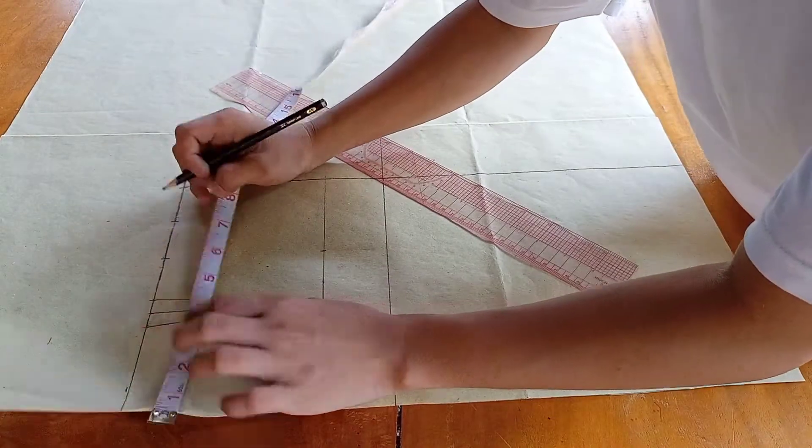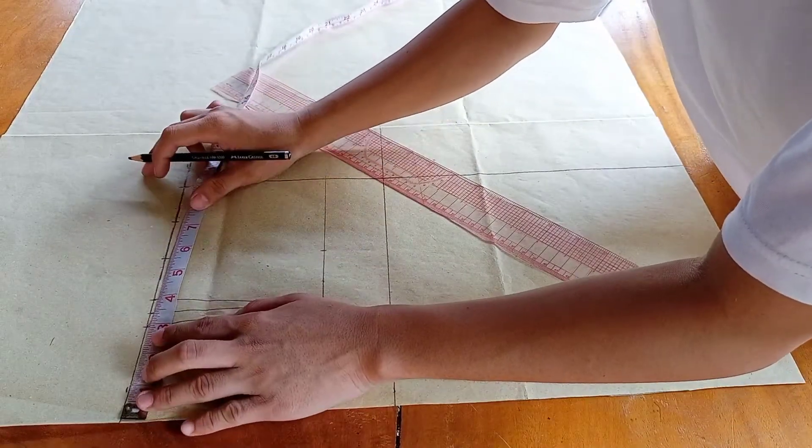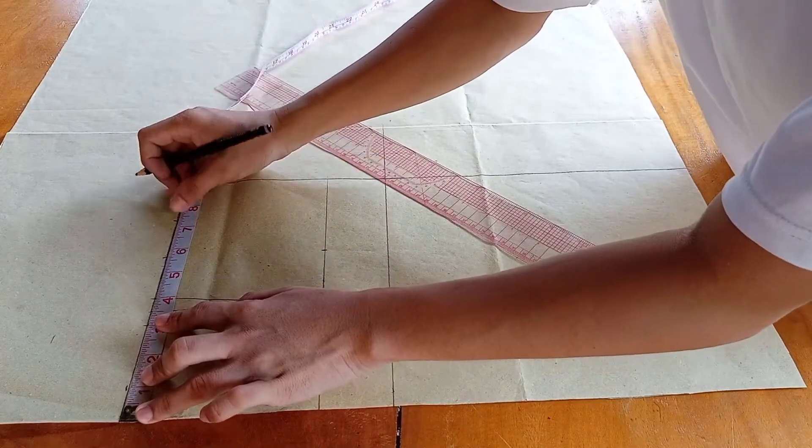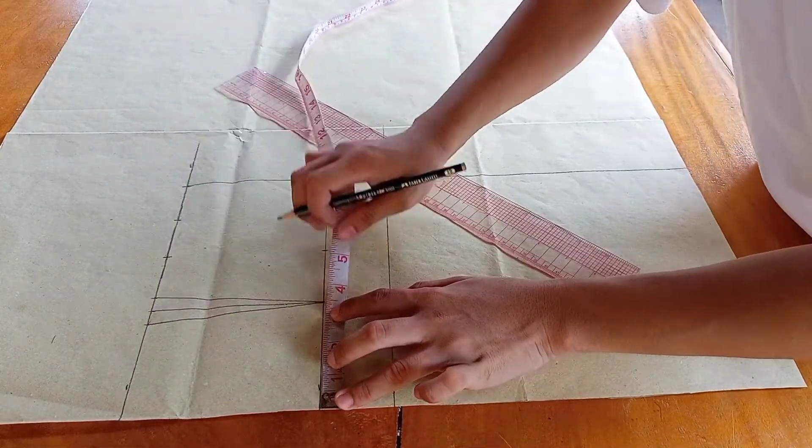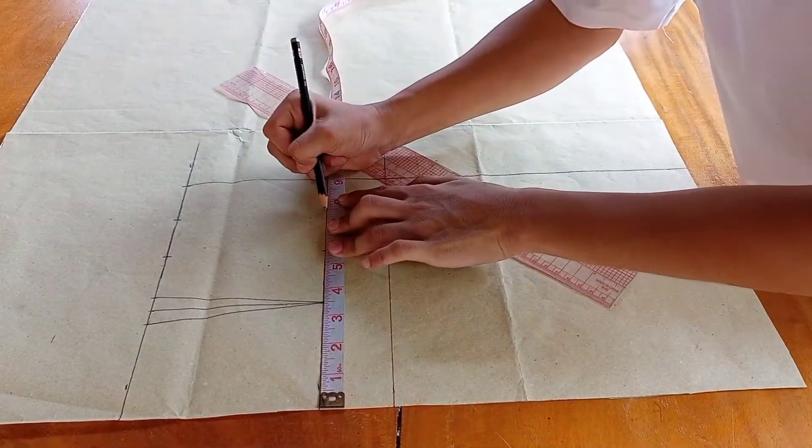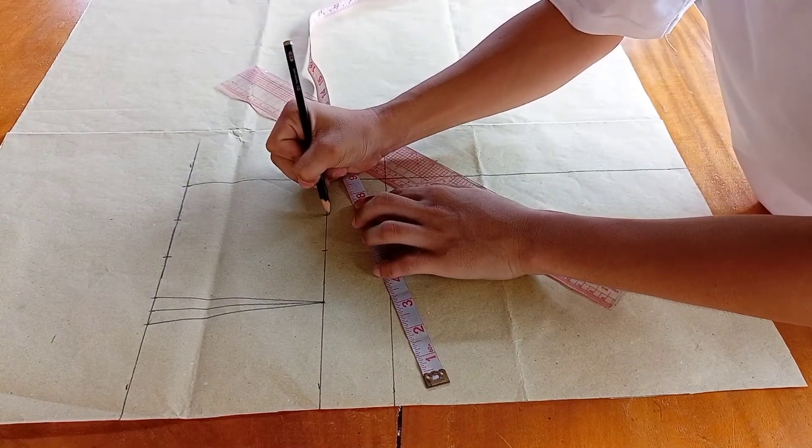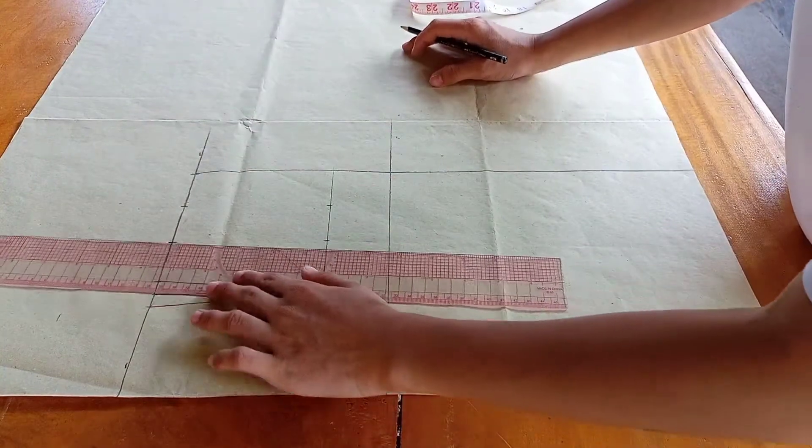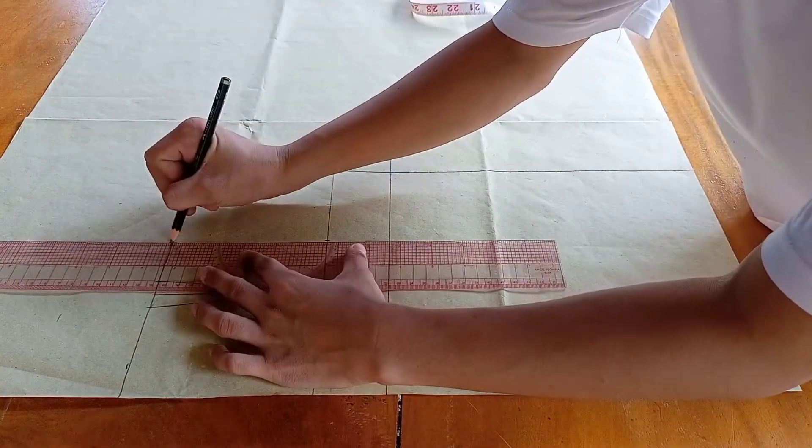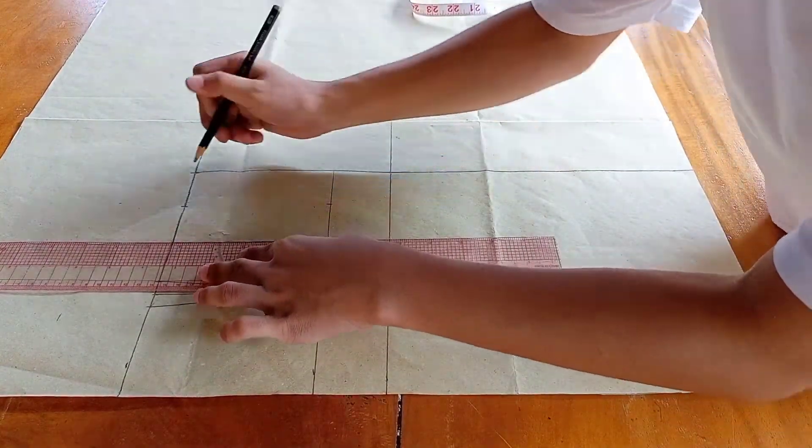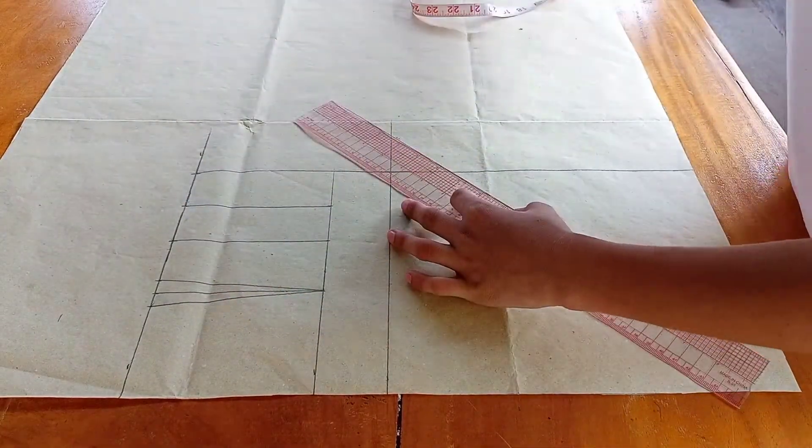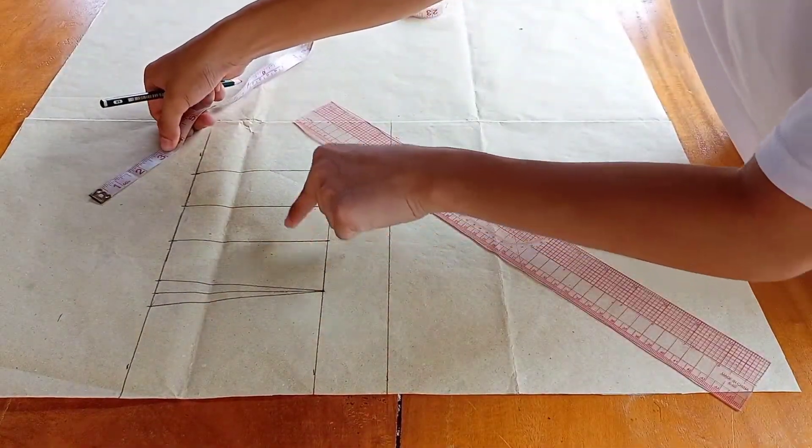For the third dart, let's measure 7 and 1/4 inches. This technique is to straighten the dart lines. Now, connect the lines to create straight lines. This is the second dart. This is the third dart.